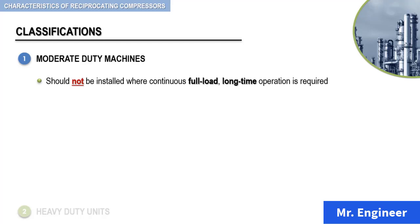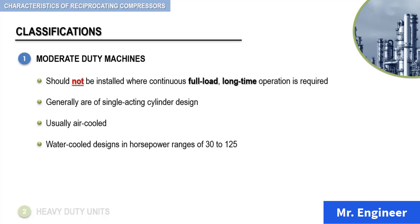In general, moderate-duty compressors are of single-acting cylinder design. Usually, these compressors are air-cooled. However, they are also offered as water-cooled designs in horsepower ranges of 30 to 125. They are built as single-stage units for pressure ratings up to 50 psi and as two-stage units up to 250 psi.